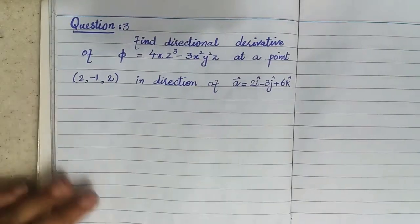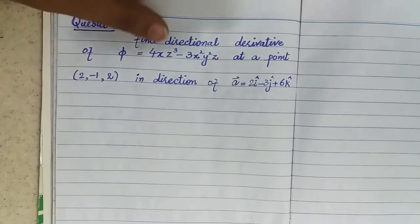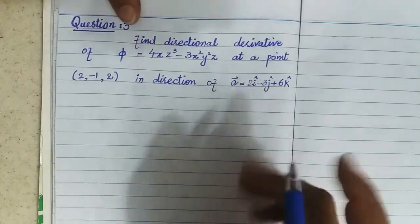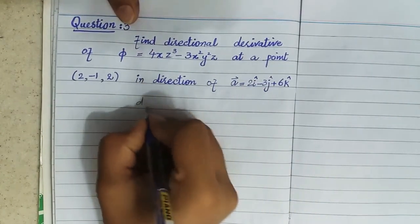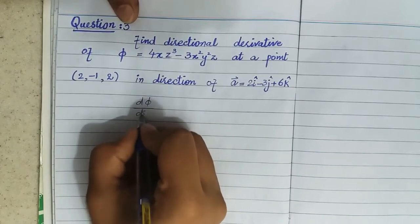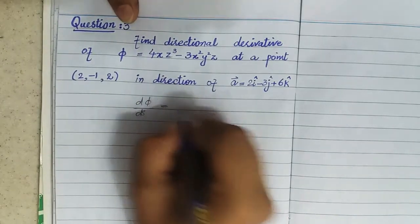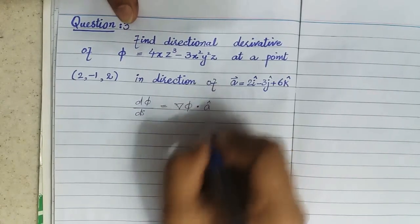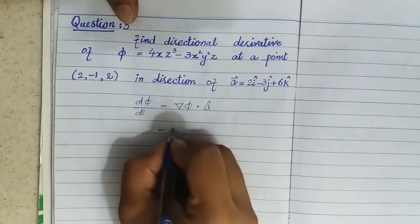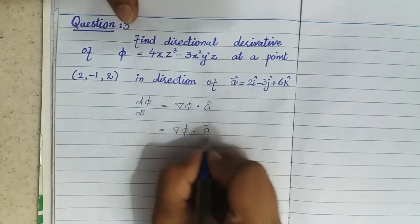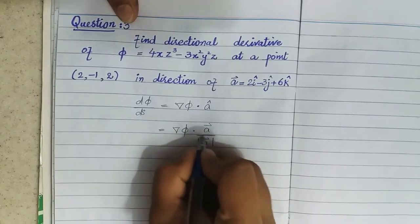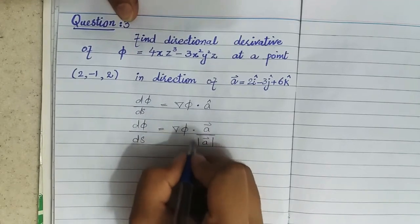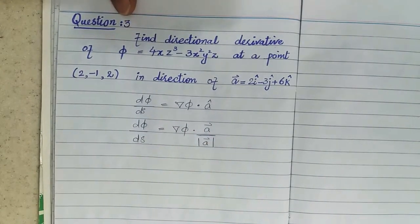Now this is question number 3. We have to find the directional derivative of a given scalar at a given point in the direction of a given vector. As we know, the formula of directional derivative is equal to the gradient of the scalar dot the unit vector, and this unit vector is equal to the vector over its magnitude.